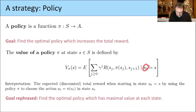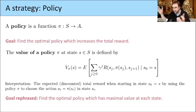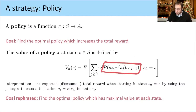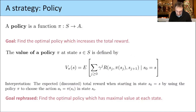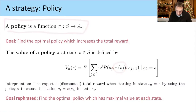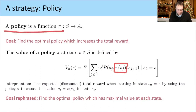Starting in S0, the next state S1 can have different values — with certain probabilities, S1 could be this state, that state, or another state. What we want is to consider all possible rewards we can get going in all these different states and get the expected value by choosing an action using this policy. If we are in a certain state Sj, then the action we choose is determined by our policy.